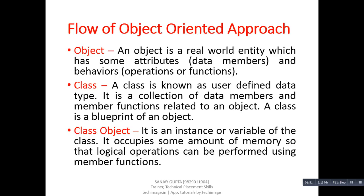A class is a blueprint of an object. After identification of an object, we can implement that object with the help of a class. You can also say that a class is a logical representation of an object — it is used to implement the attributes and behaviors of an object. The third entity is a class object, which is an instance or variable of the class.